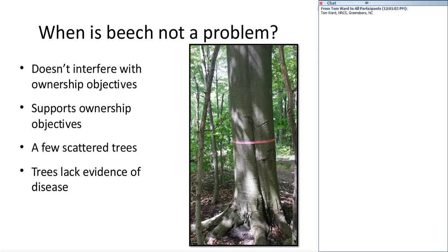If an owner is conscious and aware of the potential for beech in the woods, and if it's not interfering with their objectives, then by definition it's not a problem. It may become a problem through time, or the owner's awareness or objectives may change. As a default position, I don't want to suggest that beech in all circumstances is bad. My wife and I own a woodlot where we have just a couple of beech trees in one corner and a couple in another — beech is barely present on our property, so I don't consider it a problem there.